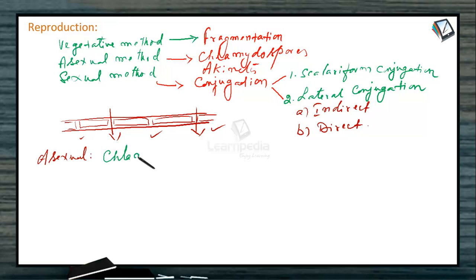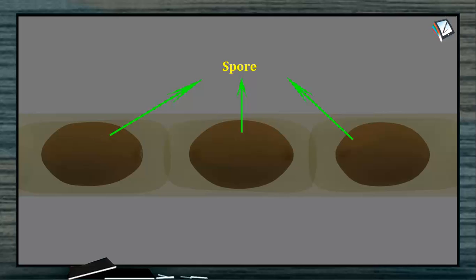The asexual method involves chlamydospores. In a Spirogyra filament, if conditions are unfavorable, the protoplasm separates from the cell wall and rounds off, condenses, and forms into a spore inside the cell. This spore produces a very thin wall around it and is called a chlamydospore. These chlamydospores are produced during unfavorable conditions. Since they do not have flagella, they can also be called aplanospores.